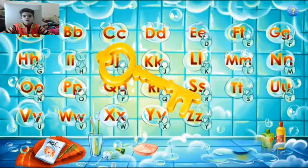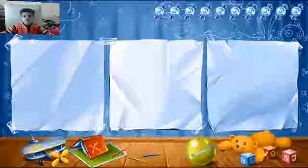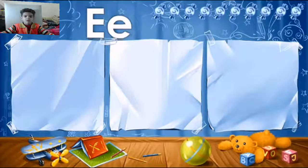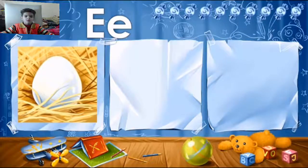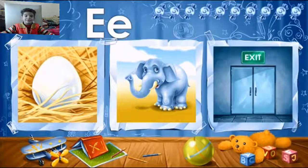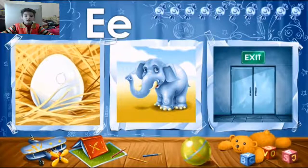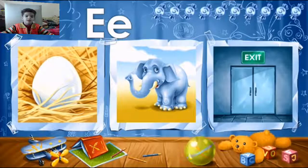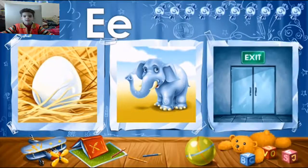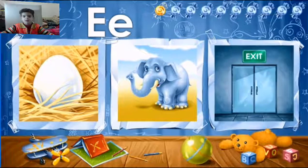Choose the next letter. These pictures start with the letter E. Repeat after me: Egg, elephant, exit! Egg, elephant — you've learned the letter E. Take your candy. Exit!